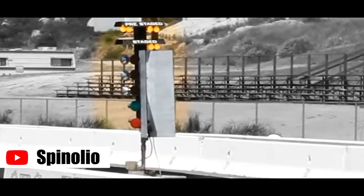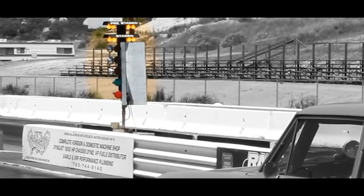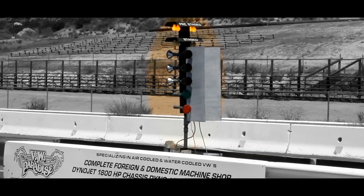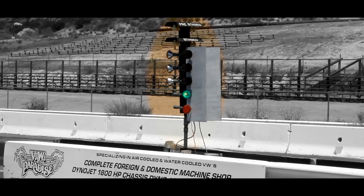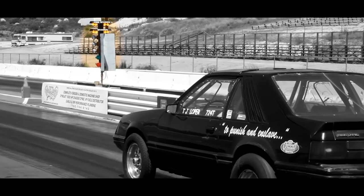So for anyone who isn't aware, a Christmas tree is a column of lights used for staging the cars and starting a drag race. The smaller pre-staged and staged lights on the very top show when the car is at the starting line and they're almost always followed by three amber bulbs for each lane, then a green and red light.